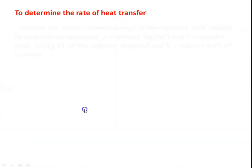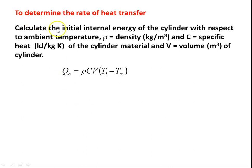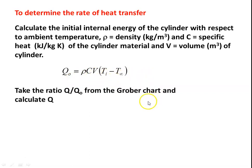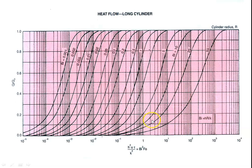To determine the heat transfer, first calculate Q₀, the initial internal energy of the cylinder with respect to the ambient temperature: Q₀ = ρ·C·V·(Tᵢ − T∞), where ρ is density, C is specific heat, and V is the volume. Using the Grober chart, find the Q/Q₀ ratio, which is a function of Bi²·Fo and Biot number. The x-axis is Bi²·Fo, the y-axis is Q/Q₀, and lines correspond to different Biot numbers. Knowing any two parameters, you can calculate the third.